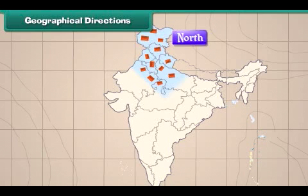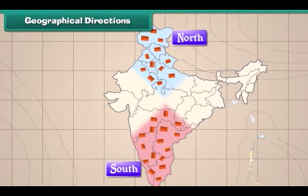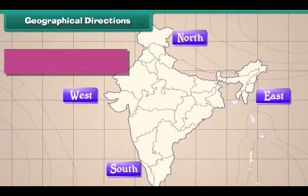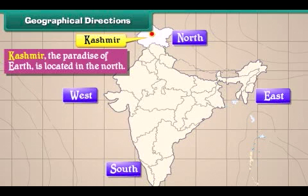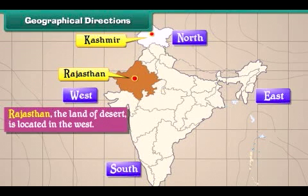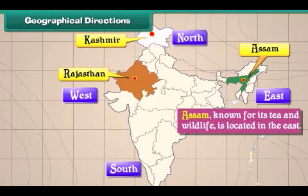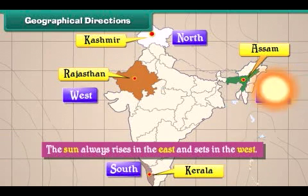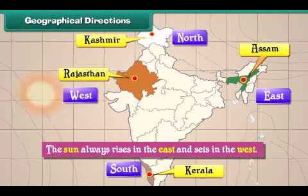People live at different places in India. Some places are in the north, while some others are in the south. Some places are located in the east and some others in the west. Kashmir, the paradise of earth, is located in the north. Rajasthan, the land of desert, is in the west. Assam, known for its tea and wildlife, is in the east. Kerala, famous for its spices and backwaters, is in the south. The Sun always rises in the east and sets in the west.